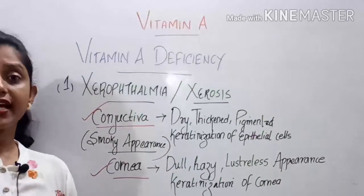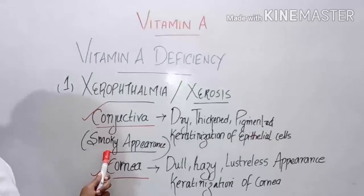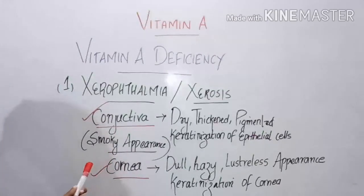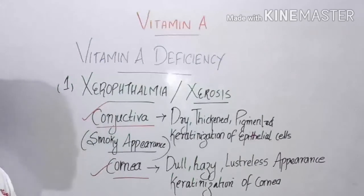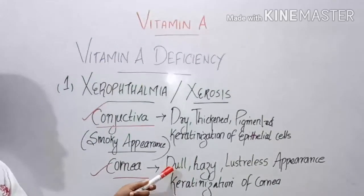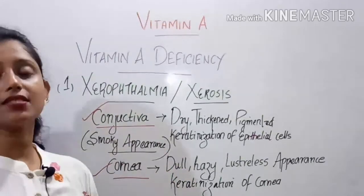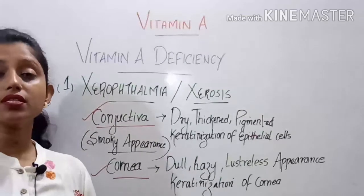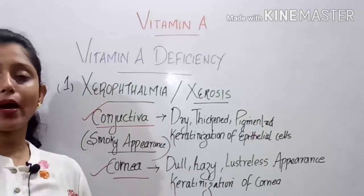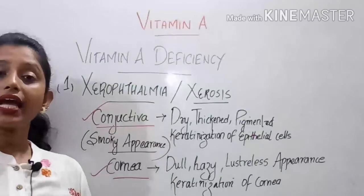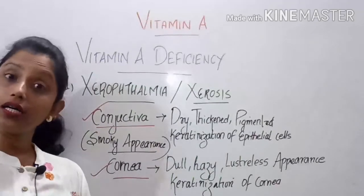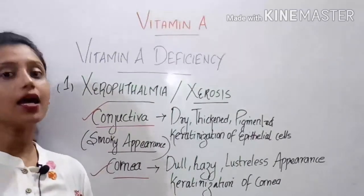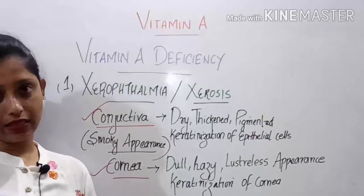This causes the conjunctiva to take on a smoky appearance. The cornea may also get keratinized, resulting in a dull, hazy, and lustreless appearance — the cornea loses its brightness. This is referred to as xerophthalmia, and it is one of the major early complications of Vitamin A deficiency.